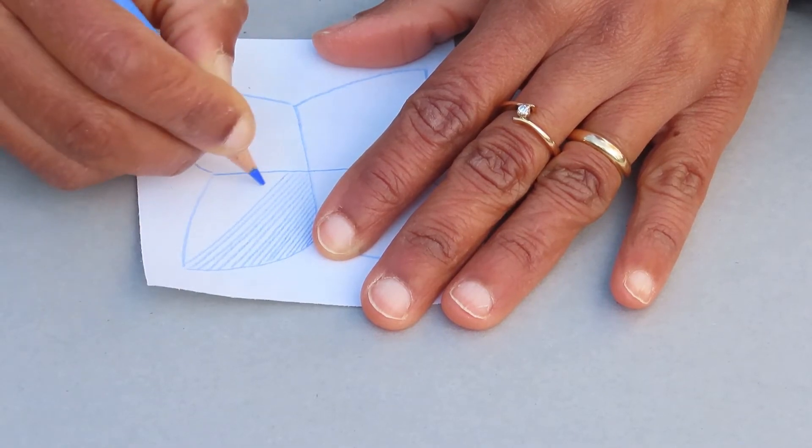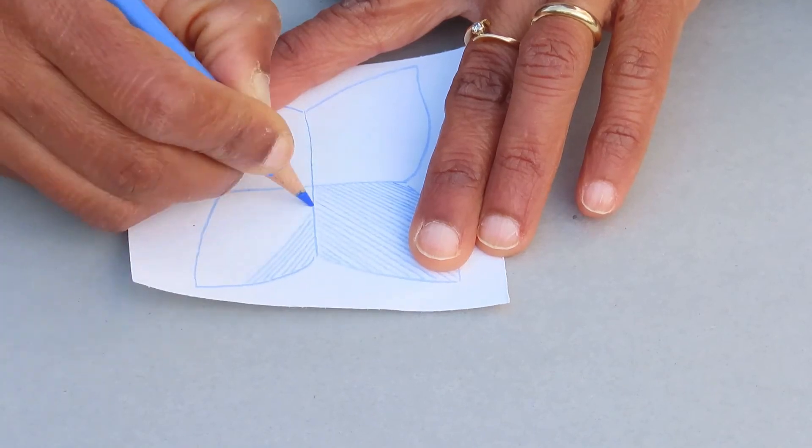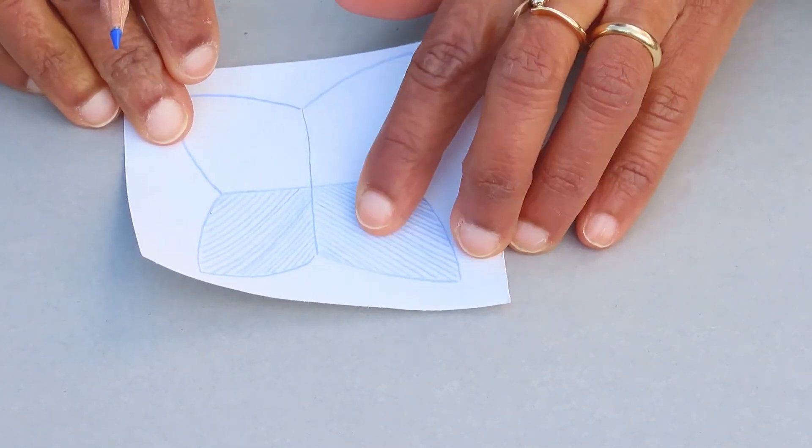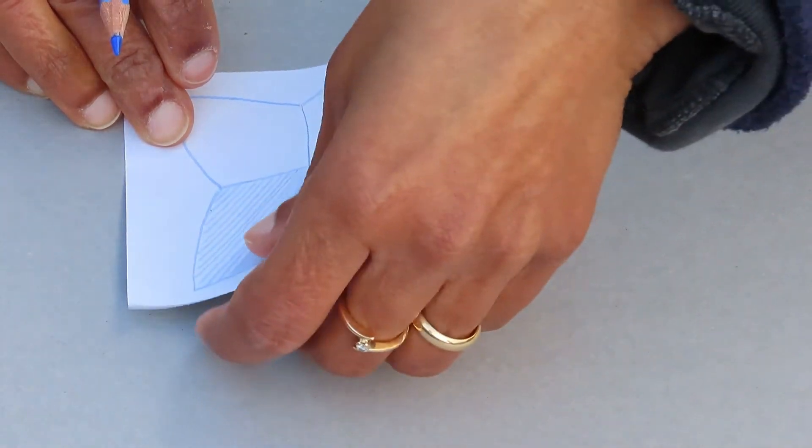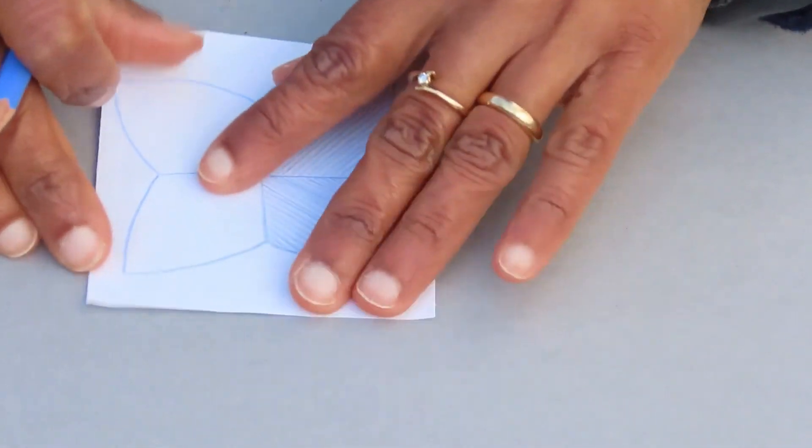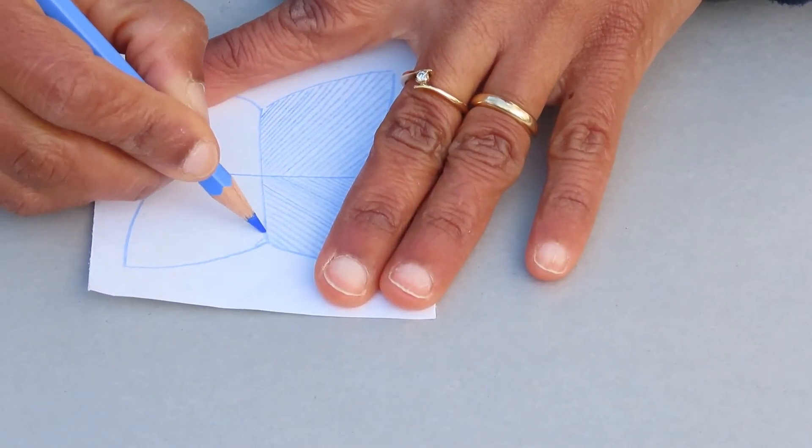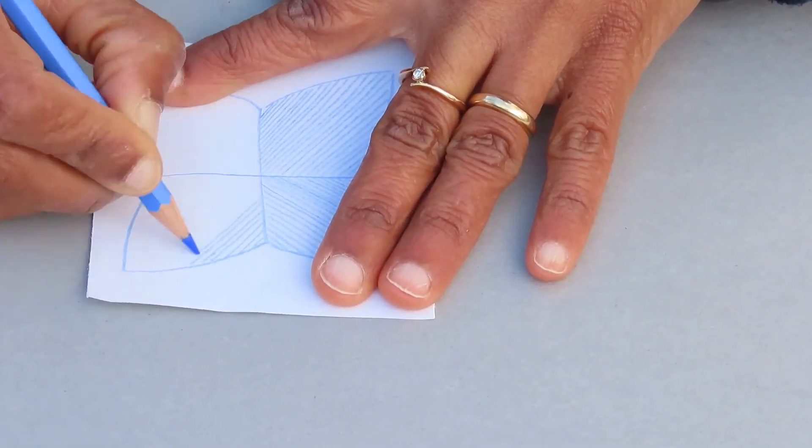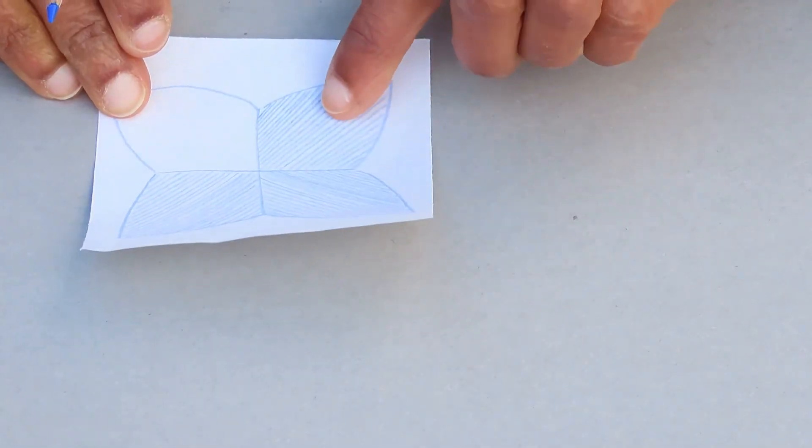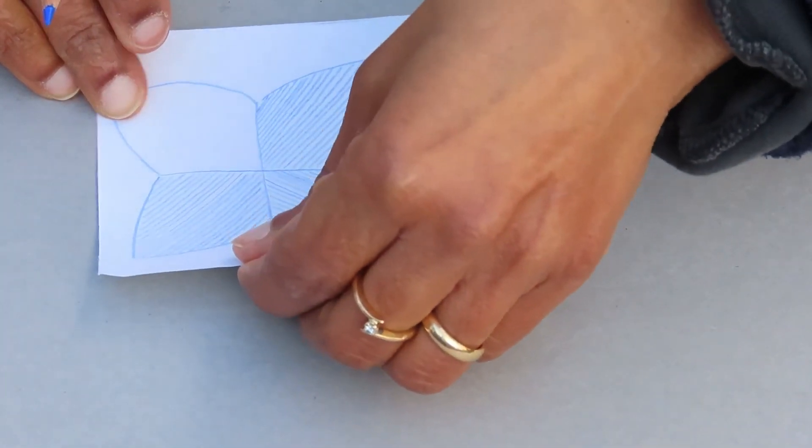One petal is done, turn the paper. Two petals done, turn the paper. One, two, three. Three petals done.